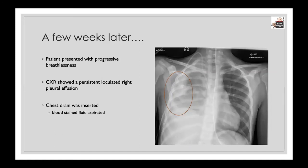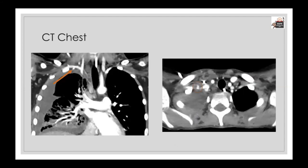The patient was returned to the ward, but a few weeks later the oncologist reported that the patient had progressive breathlessness. Chest x-rays showed a persistent right-sided loculated pleural effusion. A chest drain had been inserted and had yielded blood-stained fluid. The concern was that there was an ongoing slow leakage of blood from the initial subclavian artery injury, so a contrast-enhanced CT was performed.